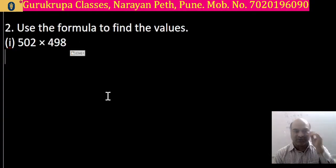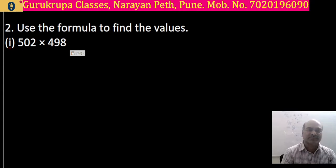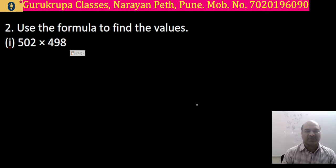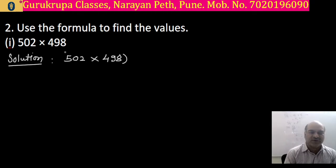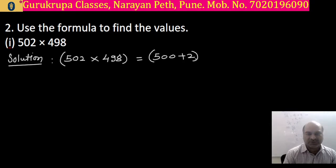Next, question number 2: use the formula and find the value. We have to convert into binomial form. So 502 into 498 — both numbers are near to 500. If we do 500 plus 2 we get 502, and if we subtract 2 from 500 we get 498.